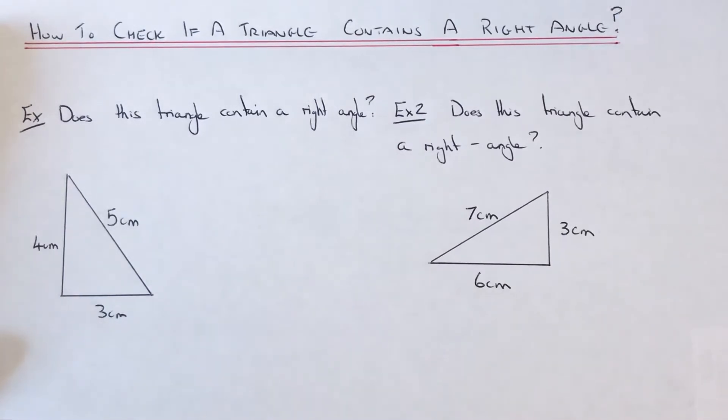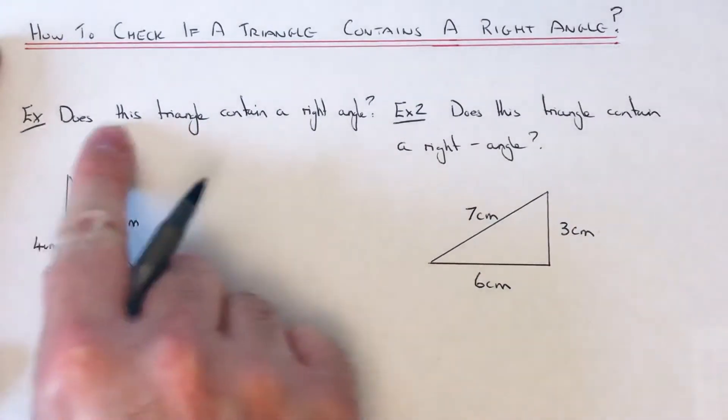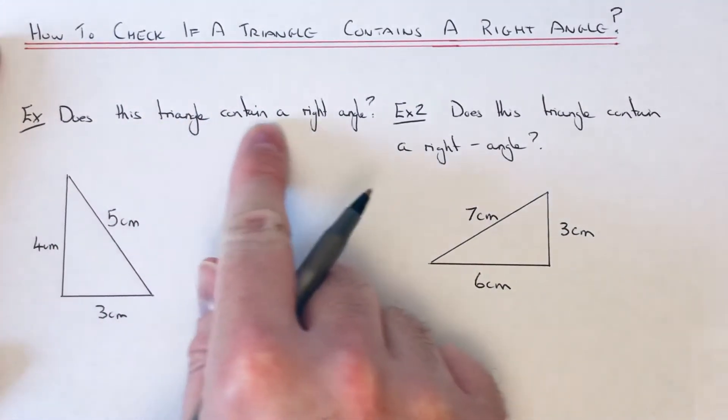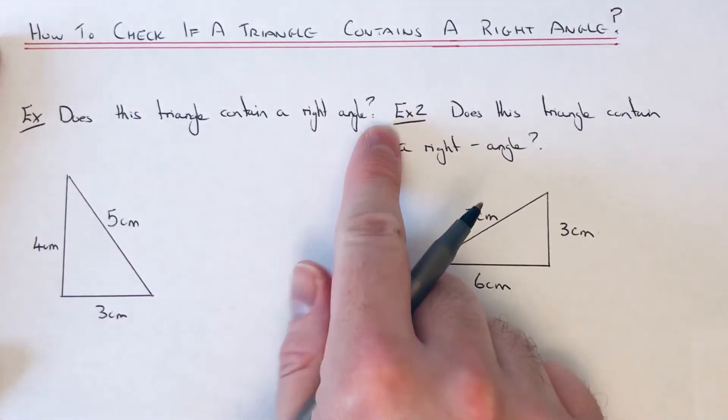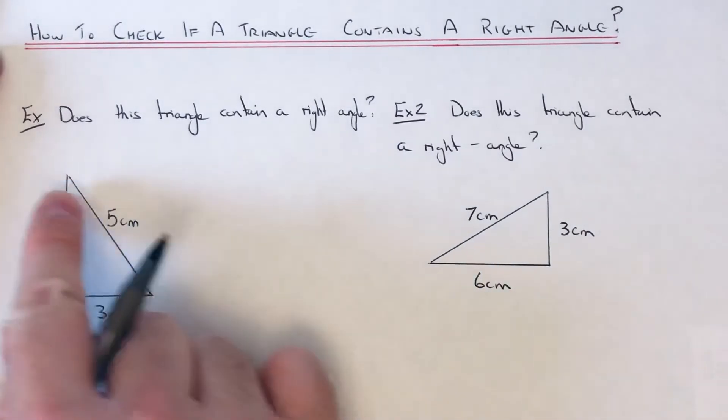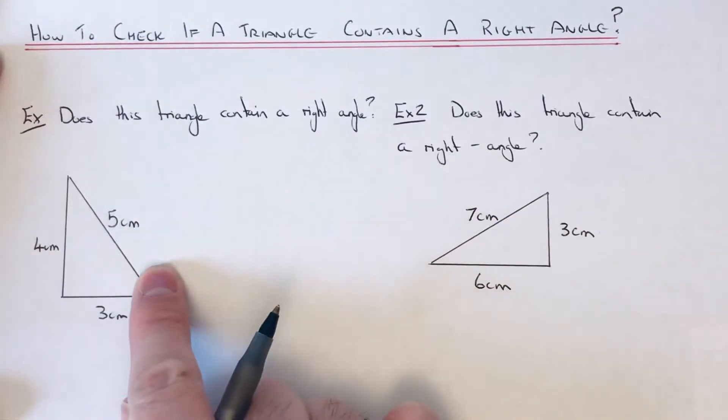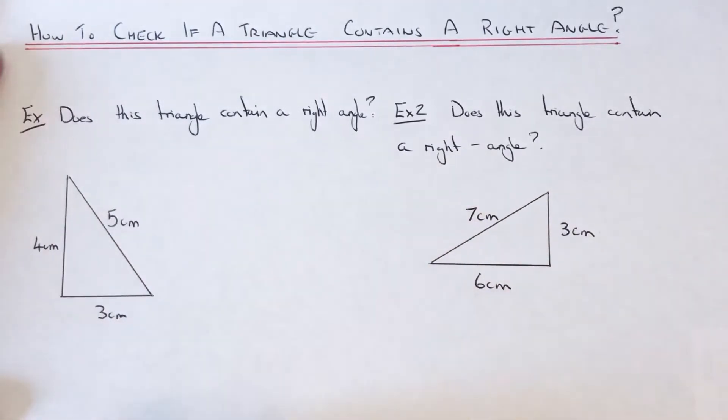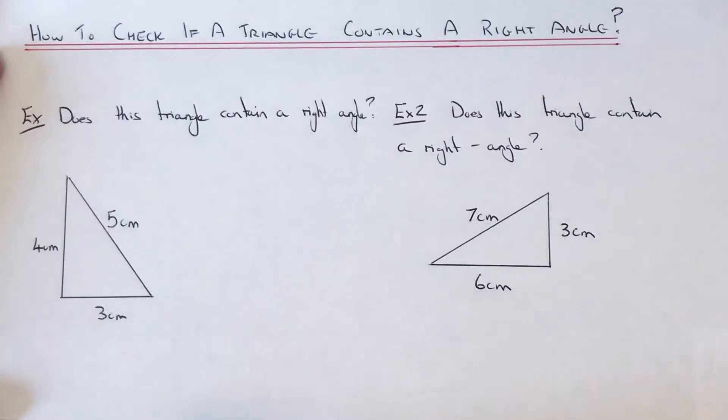So let's have a look at our first example. Does this triangle contain a right angle? We've got the two sides 3cm, 4cm, and this side has 5cm along this side. What we're going to do then is just ignore that 5, the longest side.